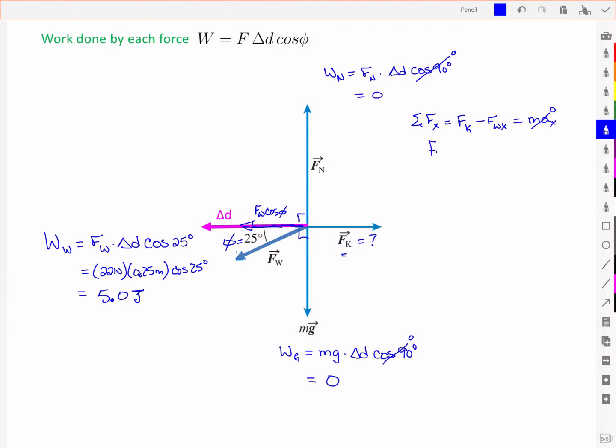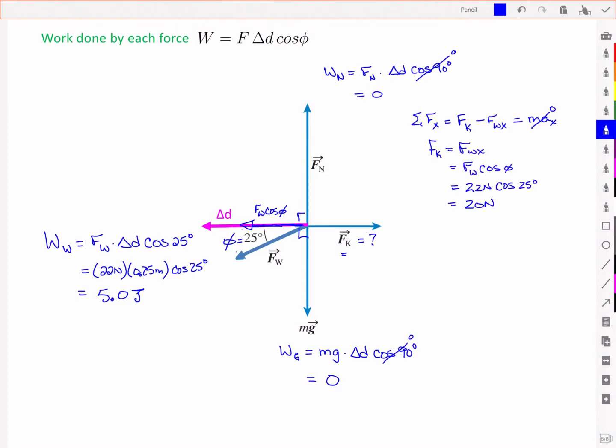And so it tells me that those two are balanced out. And so the force due to the kinetic friction that is balancing out that x component is 20 newtons. And from there then I'm going to solve for my work due to that kinetic friction or kinetic force.